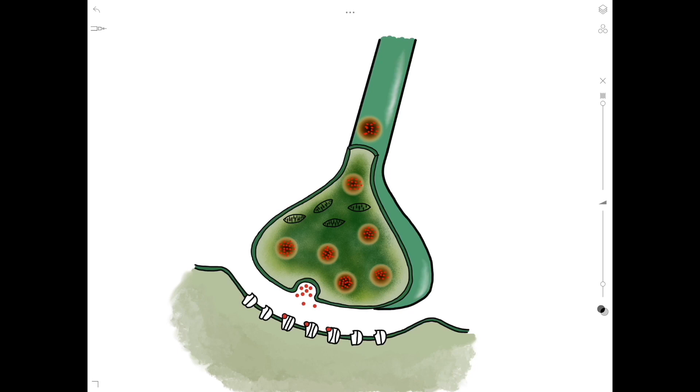A synapse is a junction between a neuron and another cell. This other cell is often also a neuron.